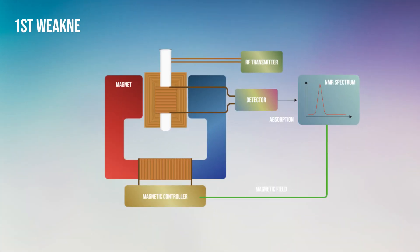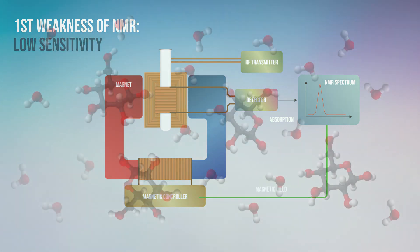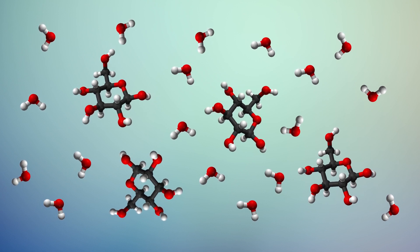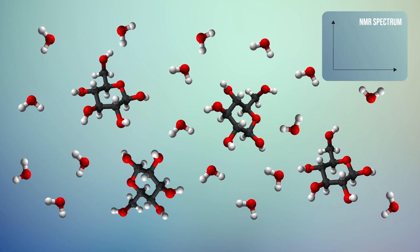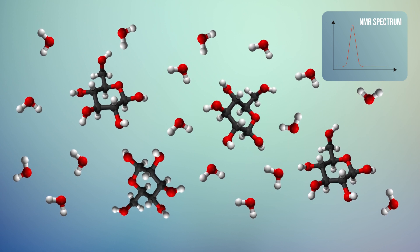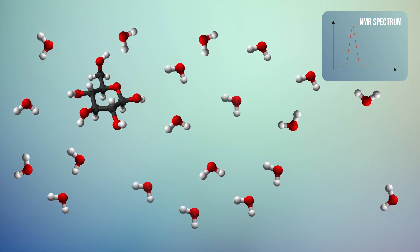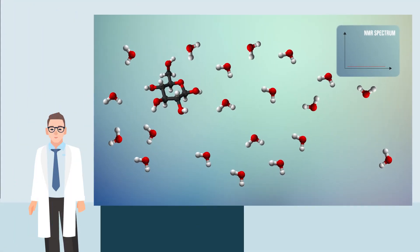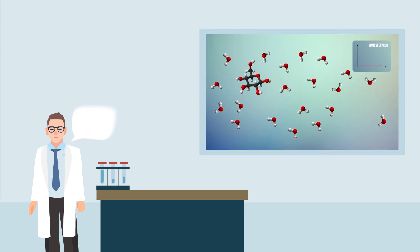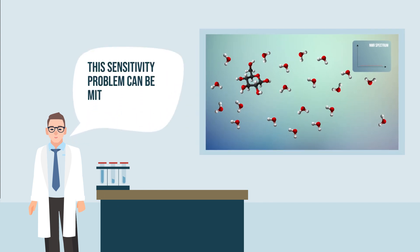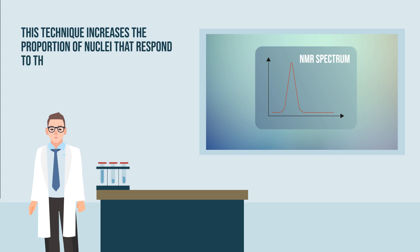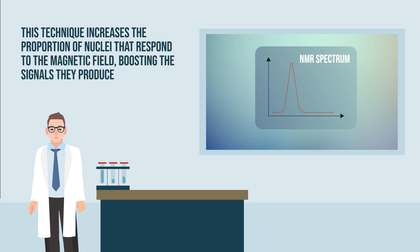The first weakness is NMR's low sensitivity. This means you need a large number of detectable atomic nuclei in your sample to generate a coherent signal — a problem if you want to study trace amounts of a molecule, for example, identifying impurities in a chemical mixture. As Dr. Norcott explains, this sensitivity problem can be mitigated with hyperpolarization, a technique that increases the proportion of nuclei that respond to the magnetic field, boosting the signals they produce.